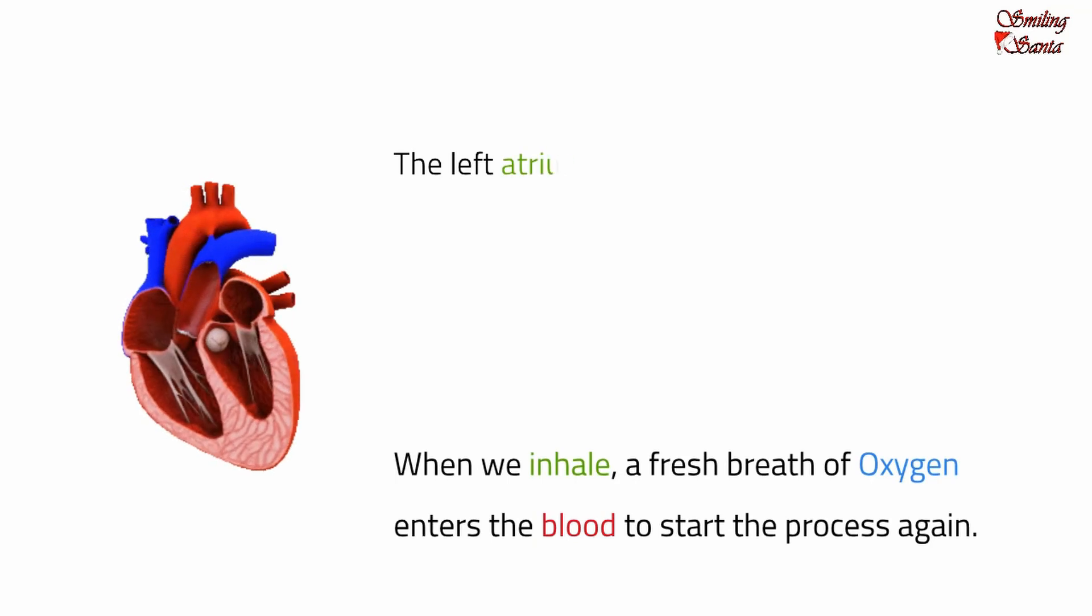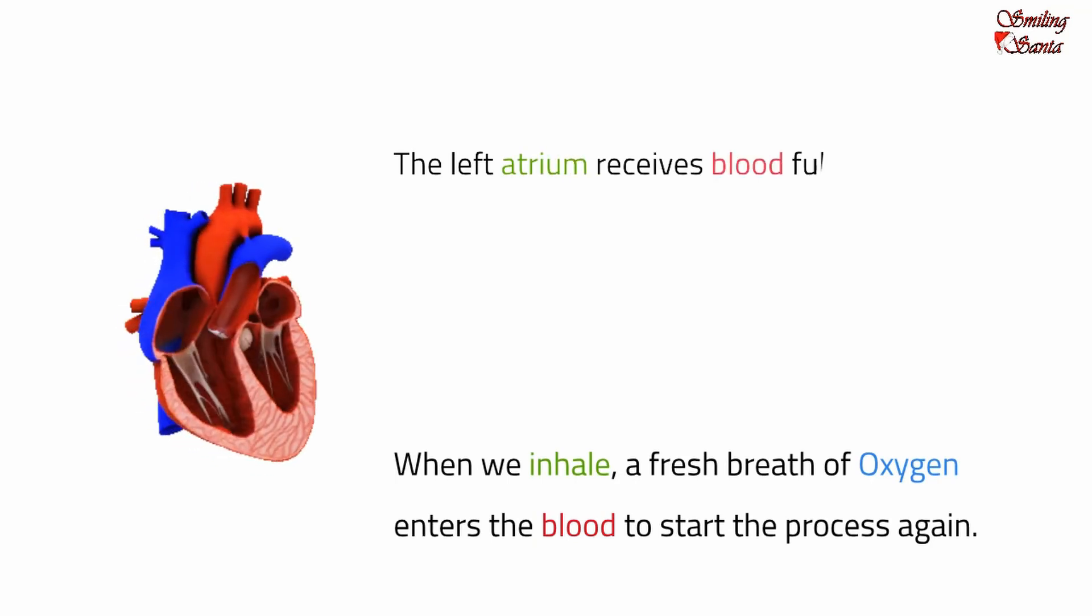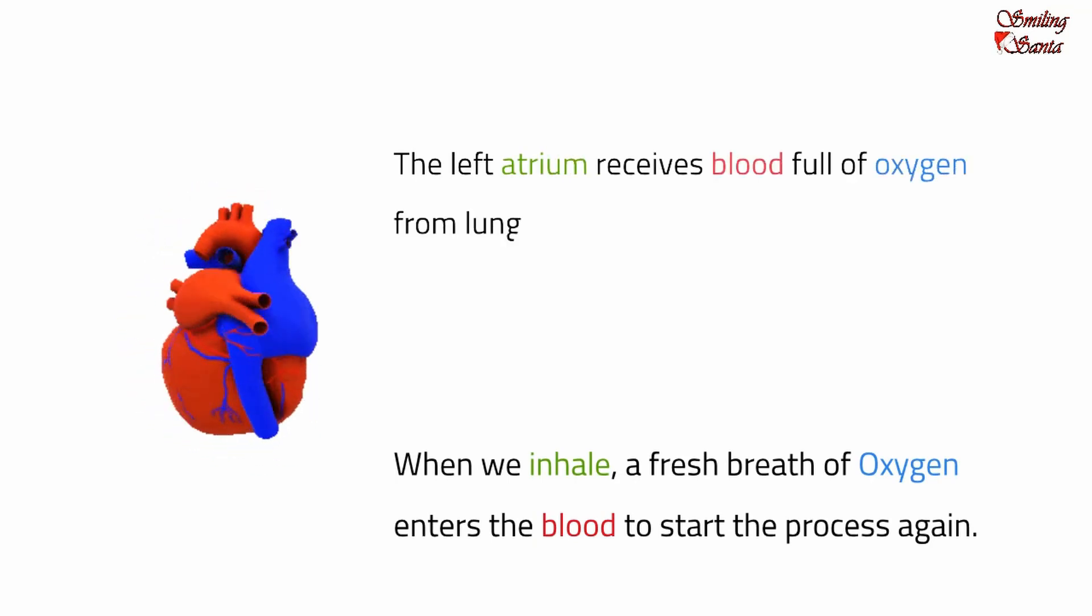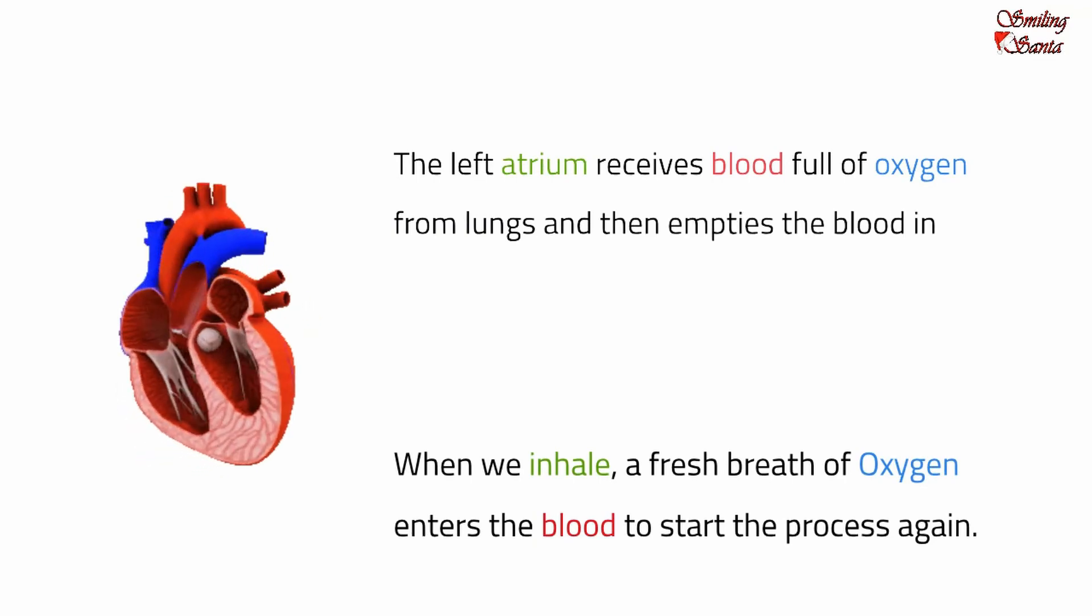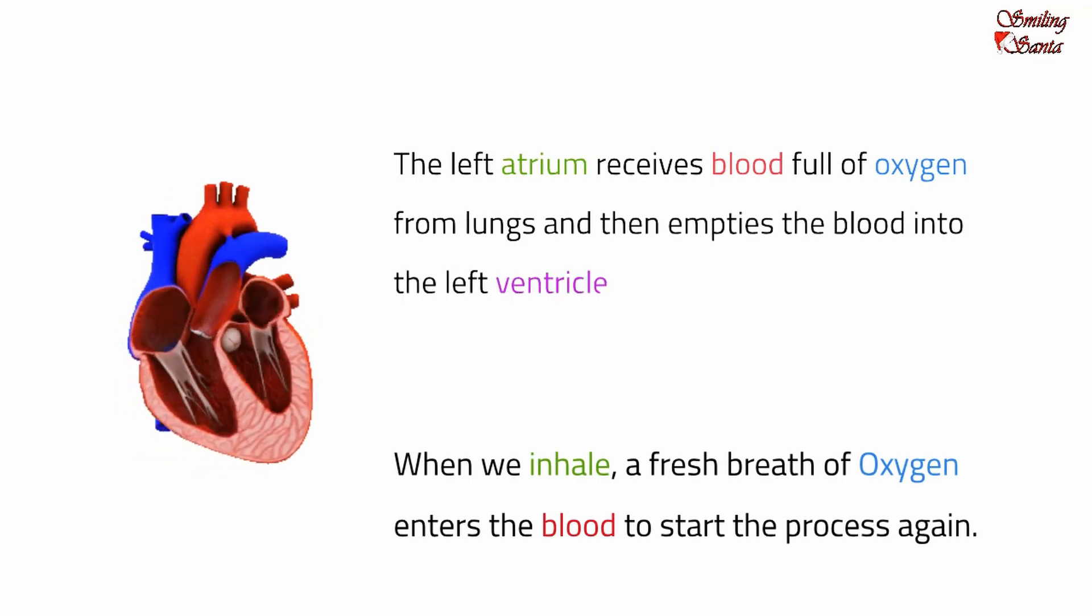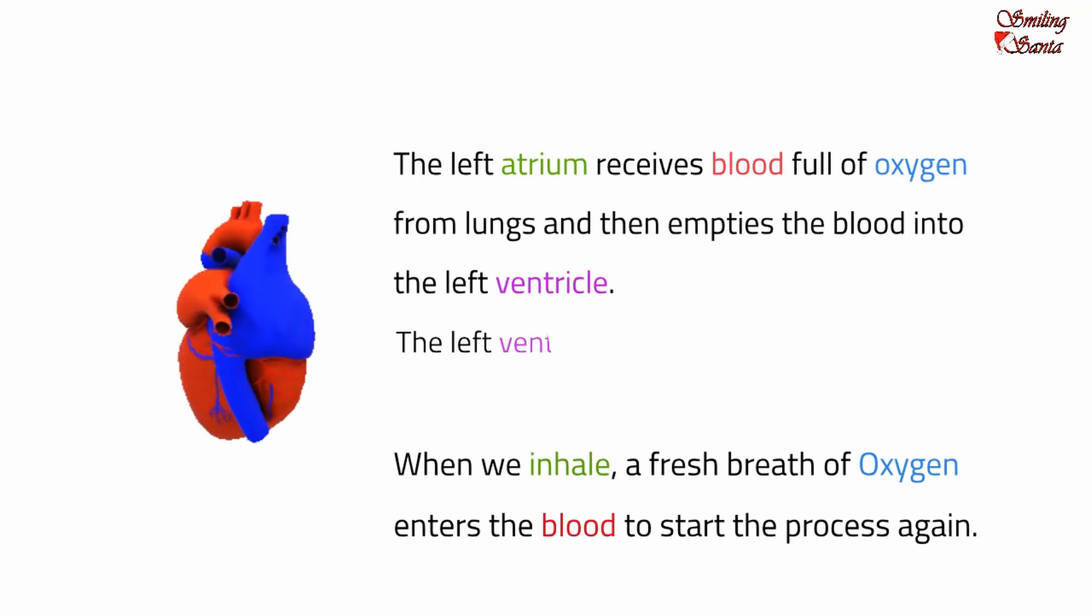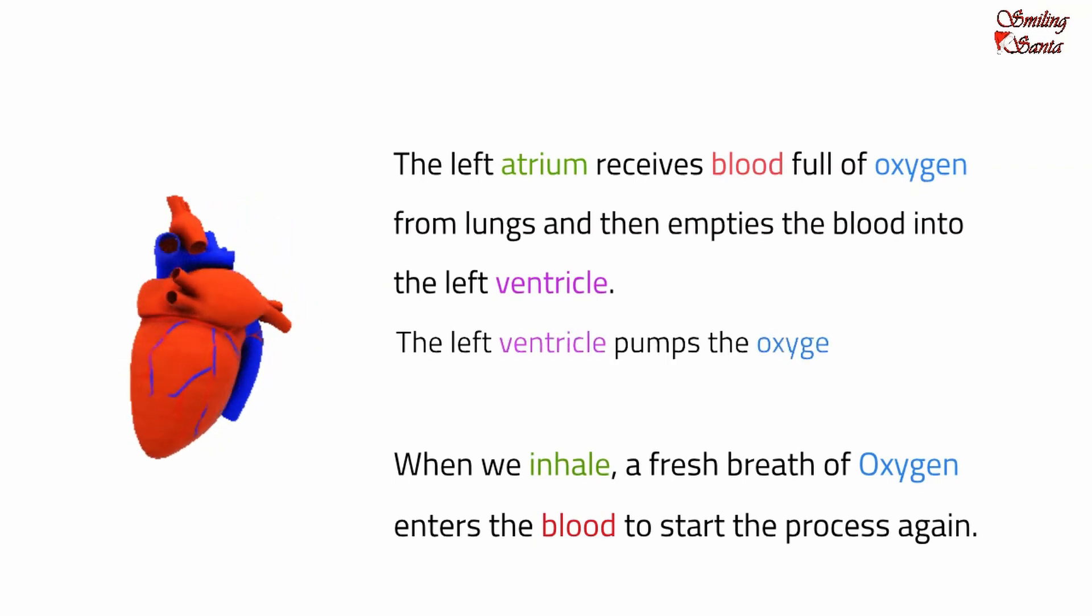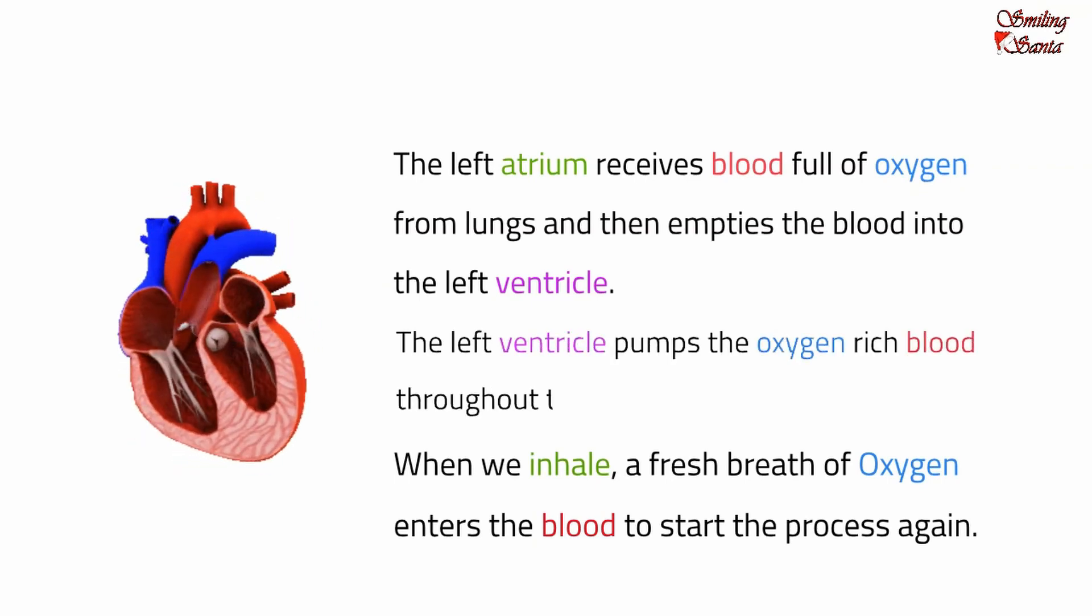The left atrium receives blood full of oxygen from the lungs and then empties the blood into the left ventricle. The left ventricle pumps the oxygen-rich blood throughout the body.